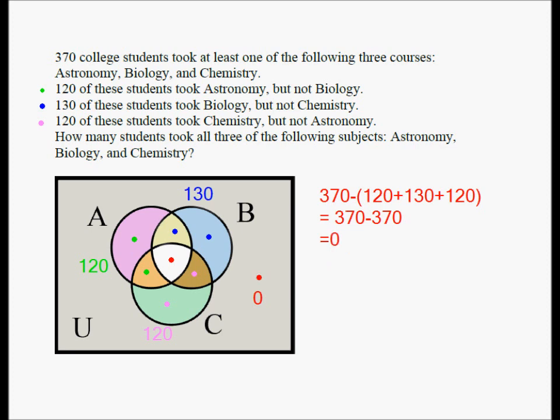Zero people, zero students took all three of the following subjects: astronomy, biology, and chemistry. So the answer is zero.